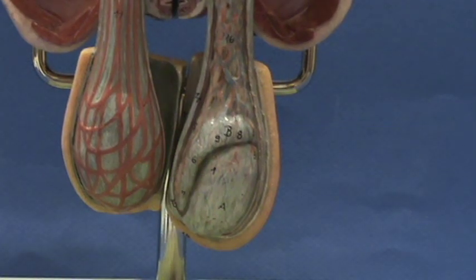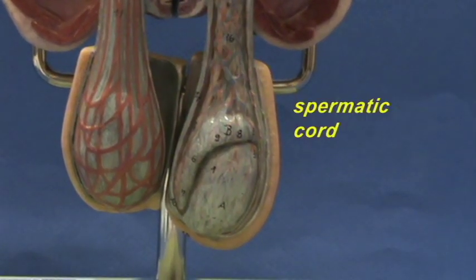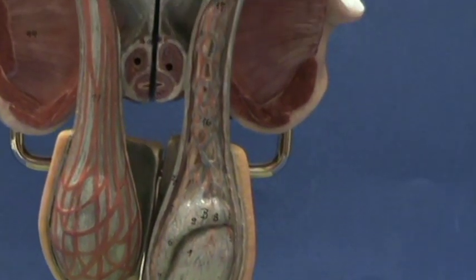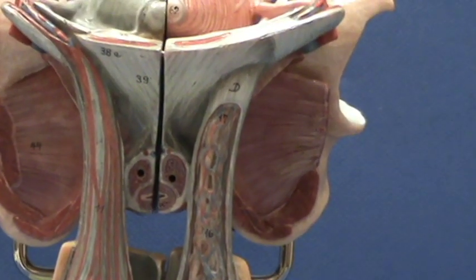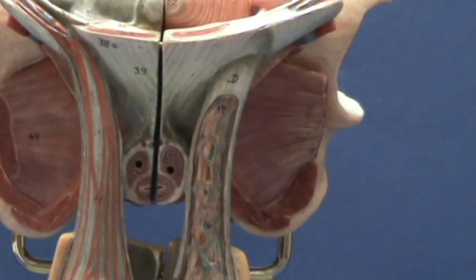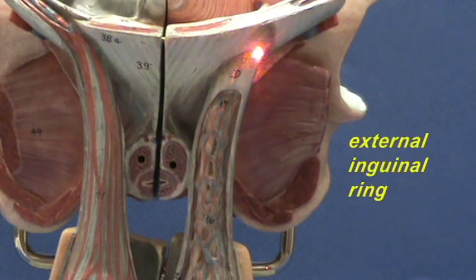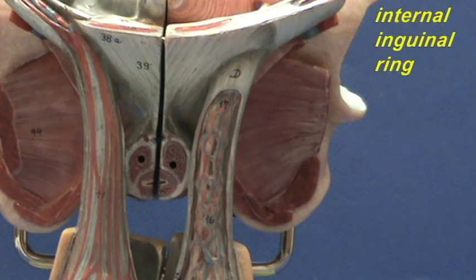Right over here, we see the spermatic cord, and we can make out some of the structures found within it. We can follow it up back into the abdominal cavity — it enters through the external inguinal ring, goes through the inguinal canal, and opens up through the internal inguinal ring.